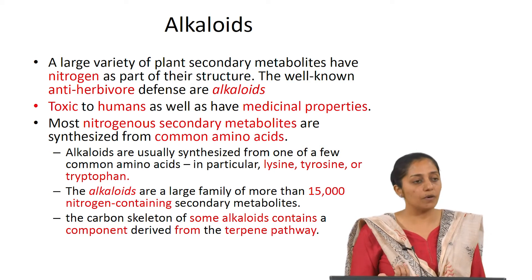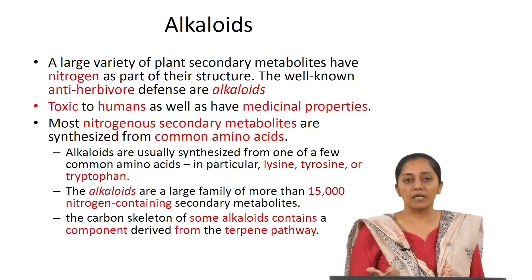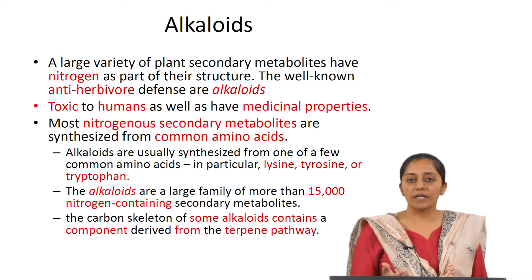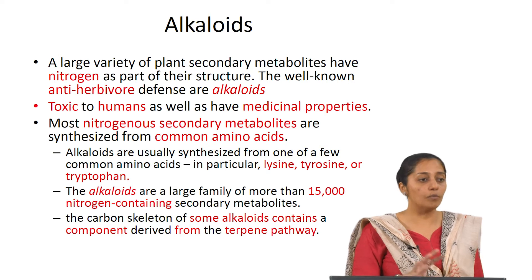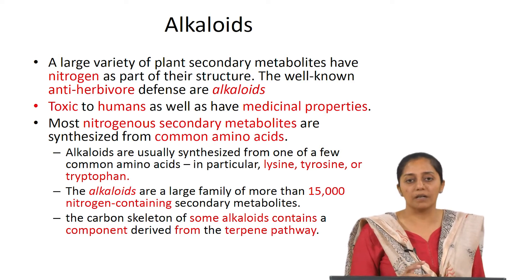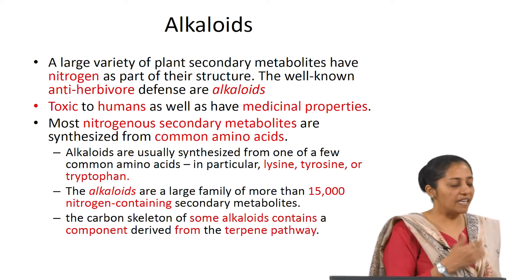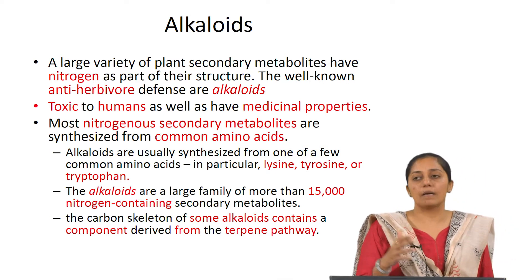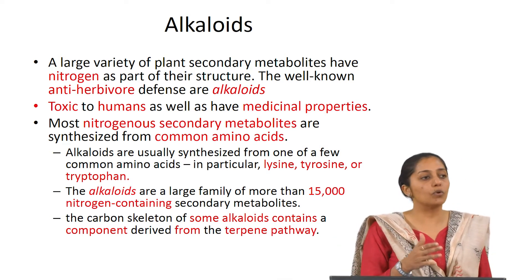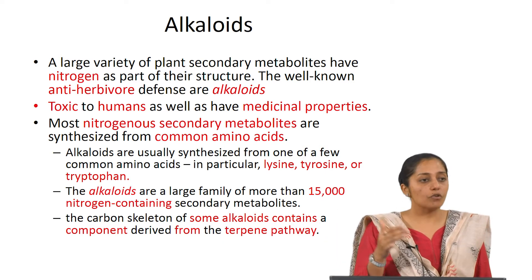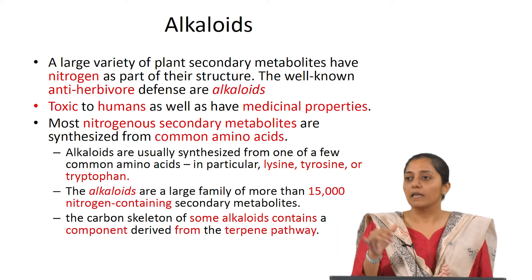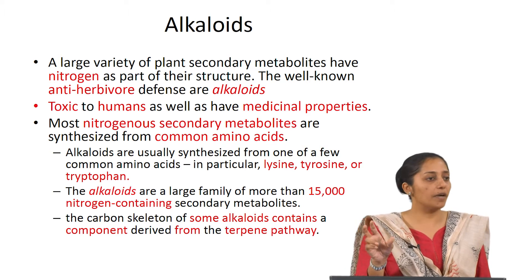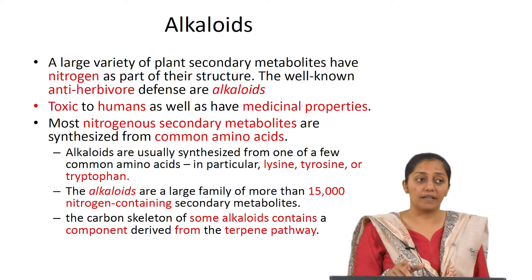The three major amino acid precursors of alkaloids are lysine, tyrosine, or tryptophan. There are almost 15,000 alkaloids present in plants. For example, camptothecin belongs to the monoterpene indole alkaloids, which means its structural moiety has both a nitrogen-containing moiety as well as a terpene moiety.